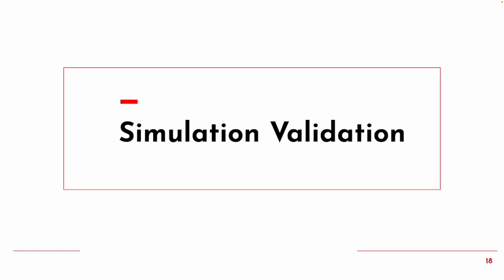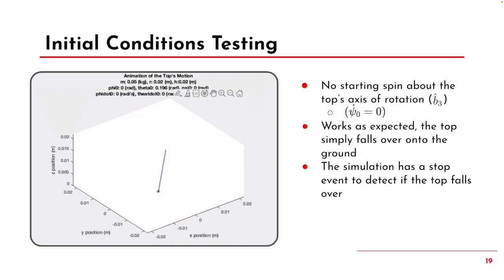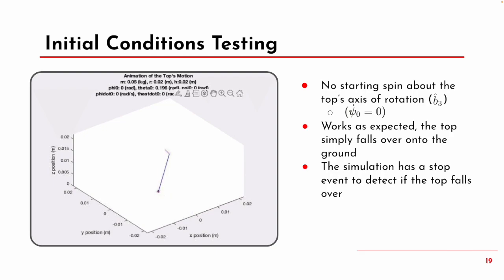Looking at the simulation results, we first did initial condition testing to see if it matched our expectations. We set the angular velocity about psi to zero so there's no spin on the top, and we expected it to just fall over. This matches our intuition, and the simulation also has a built-in stop event to detect when the top falls over and hits the ground.